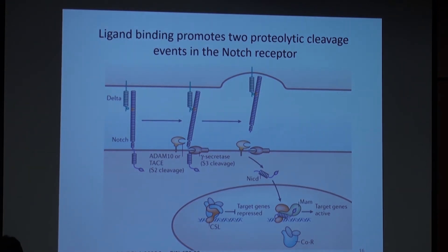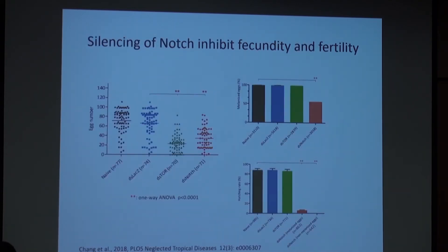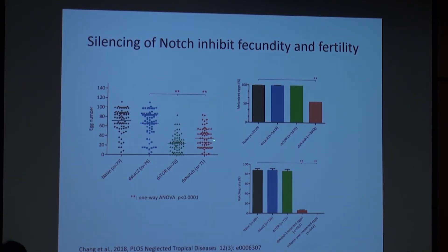Activation of the NOTCH signaling pathway requires binding of NOTCH to its ligand, Delta. After this binding, two enzymes cleave NOTCH, resulting in production of the NOTCH intracellular domain (NICD). NICD acts as a transcription factor, resulting in production of NOTCH target genes. We first examined whether NOTCH has a similar effect on egg production as Wnt and TOR. Silencing NOTCH by RNAi, we calculated egg number and found a decrease in egg production.